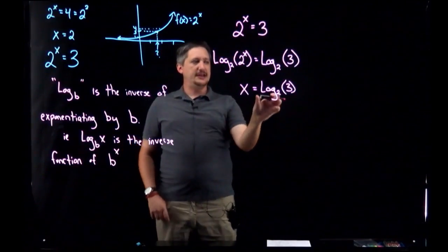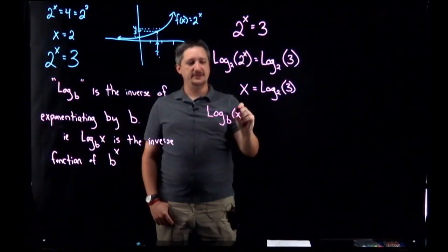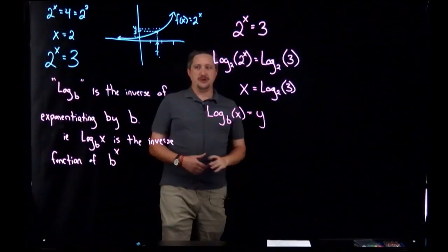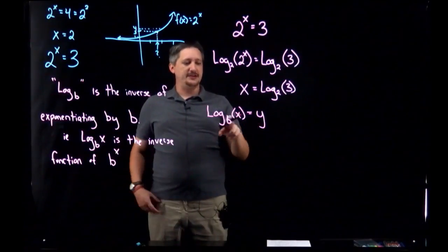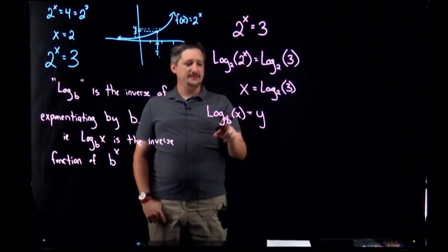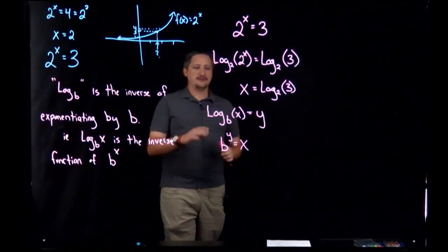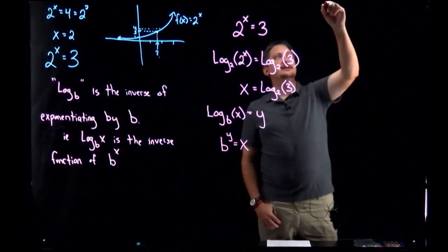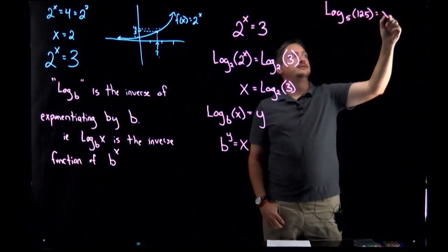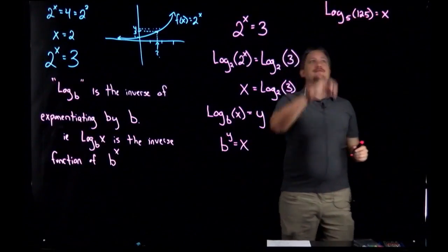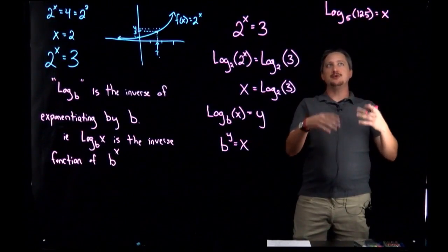Meaning that if I take this and go the other direction, if I have log base b of x equals y - log base b of something equal to some number - the exponential form of this is saying that log base b of x equals y is equivalent to b^y = x. For example, if I gave you something like log base 5 of 125 equals x...